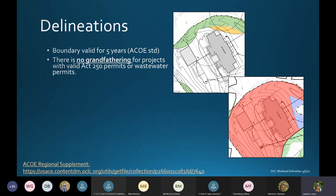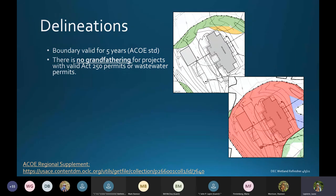For the delineation of wetland boundaries, we're looking for these boundaries to be updated every five years. Wetlands are dynamic resources, being an area between land and water. Changes in local climate or construction in an area might divert water, resulting in different sizes and shapes of wetlands across time. We're looking for boundaries delineated five years or less to be used for wetland permitting and Act 250 projects.